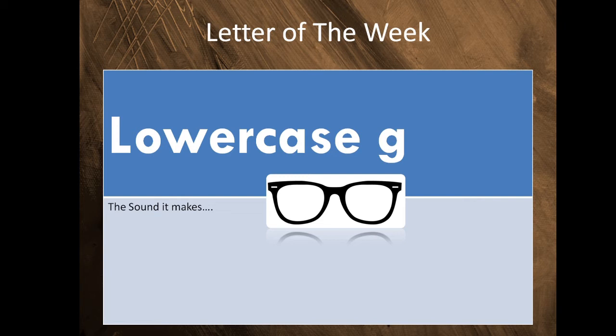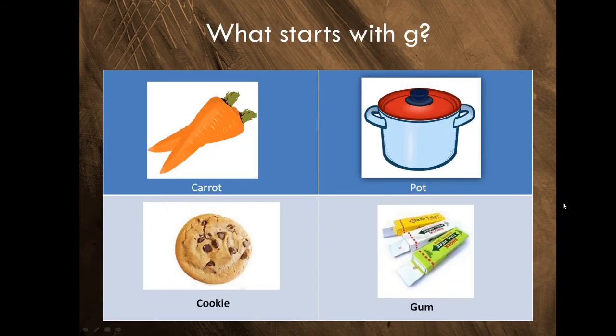Now I'm going to show you some pictures. You're going to look at each picture. Point at the picture that starts with G. I'm going to say them for you. Now you're going to listen for the G sound. Ready? I'm showing you the pictures now. Take a look at these pictures. What picture starts with G? Is it carrot, pot, cookie, gum.